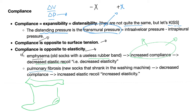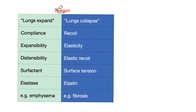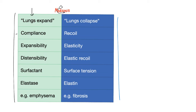On the other hand, pulmonary fibrosis is like very strong socks with a very strong rubber band — when you put it in the washing machine, it shrinks because it has very strong fibers. When you have very strong fibers, you have increased recoil but decreased compliance. All of the words in green mean the same thing: lung expansion, compliance, expansibility, distensibility, surfactant, elastase — example is emphysema.